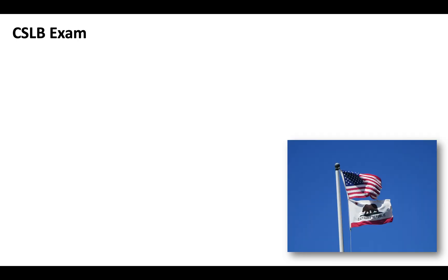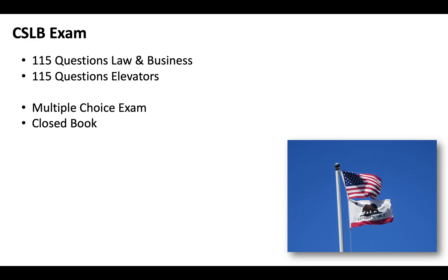So essentially, the exam will be two portions, 115 questions of California Law and Business, and 115 questions covering elevators. It's going to be multiple choice, closed book, you'll get three hours to complete each section, it's going to be computerized, and you'll take it at a CSLB testing facility.